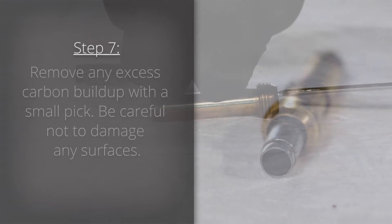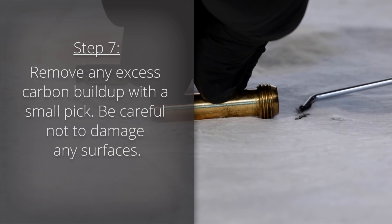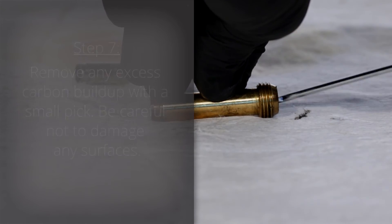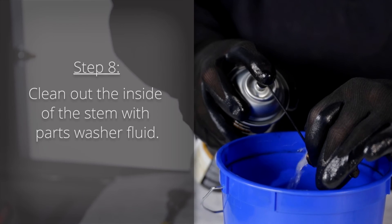Step 7: Remove any excessive carbon buildup with a small pick. Be careful not to damage any surfaces. Step 8: Clean out the inside of the stem with parts washer fluid.